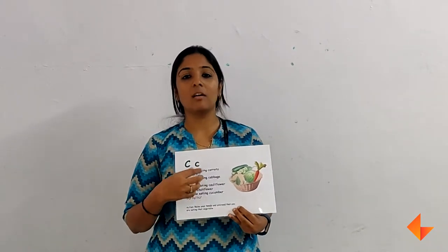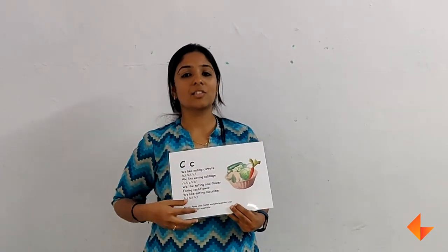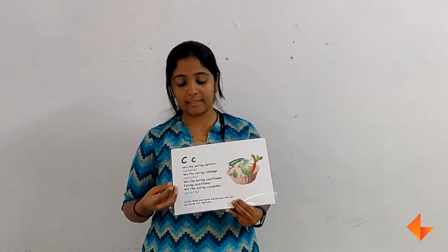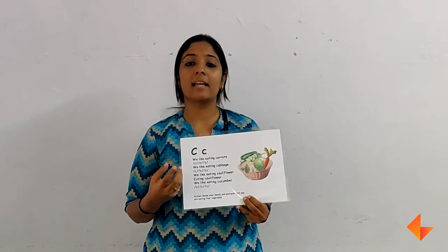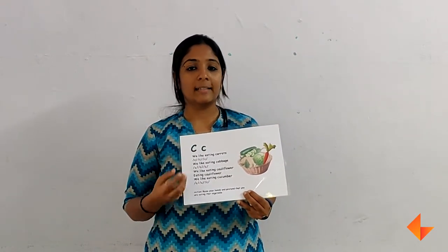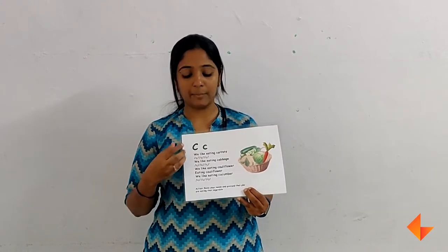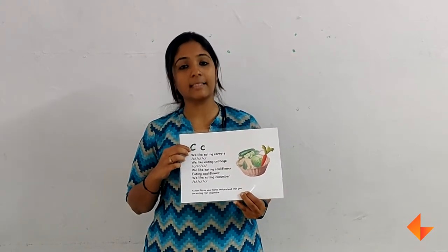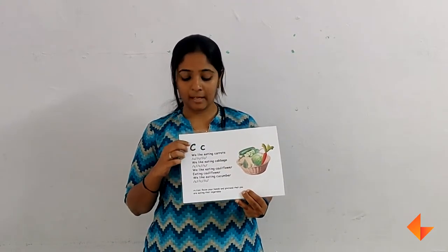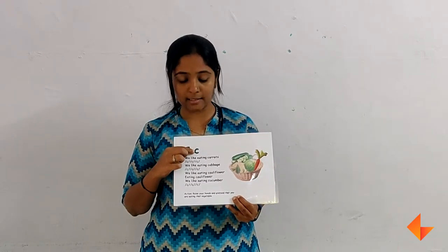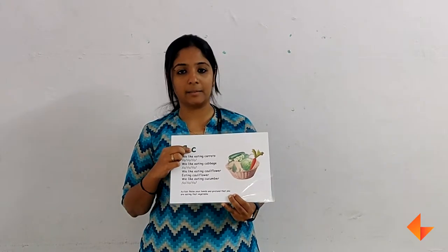Once you finish singing the song, ask the children what sound they are hearing often. Children might respond saying 'kh'. Tell them the sound 'kh' is made by the letter C. Tell them this is the capital letter C and this is the small letter C.